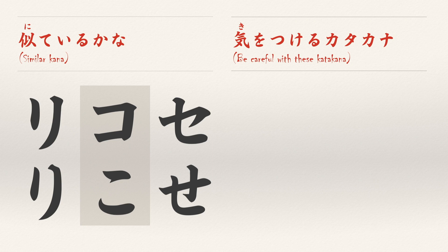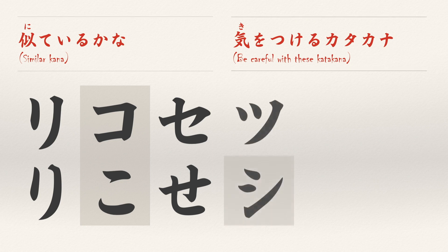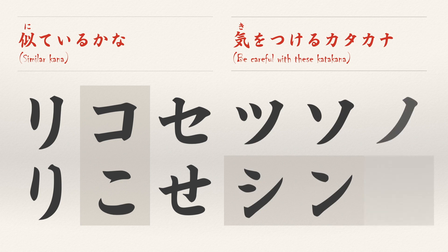Now let's look at a whole list of characters that are often confused: Tsu and Shi, So and N, and No. These five characters are mere strokes or stroke directions away from total confusion. Please be careful with the stroke count, stroke order, and directions of the strokes.